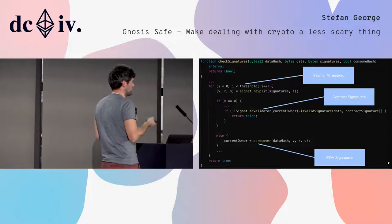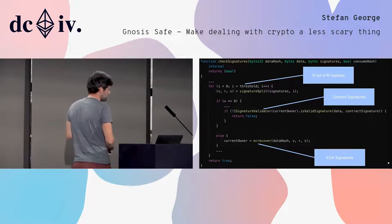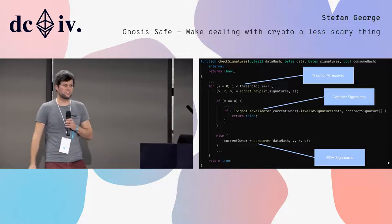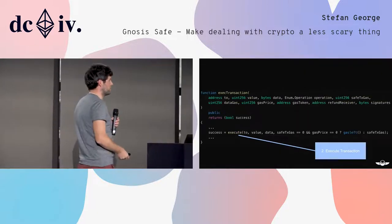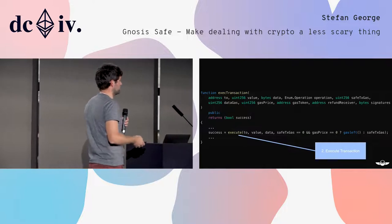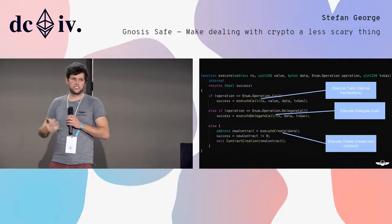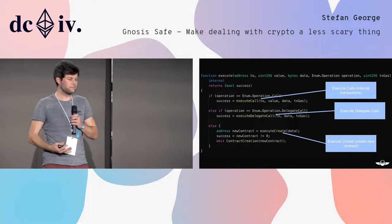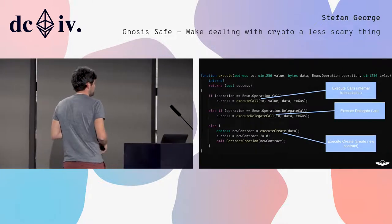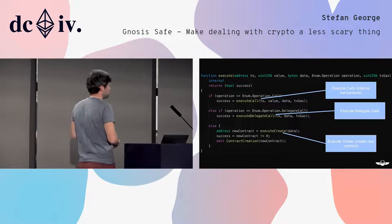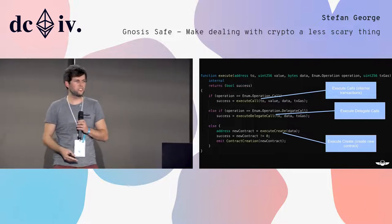The other type of signatures we allow is regular ECDSA signatures — the regular signatures that you have on Ethereum for simple private key-controlled accounts. The next step is of course just executing the meta transaction. The Gnosis Safe allows you to do all the operations you can also do with an externally owned account.